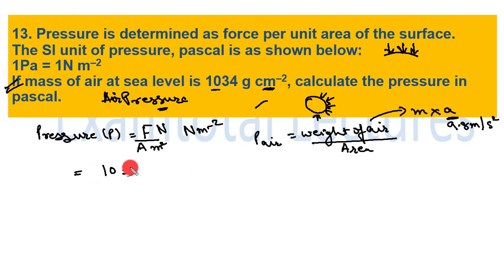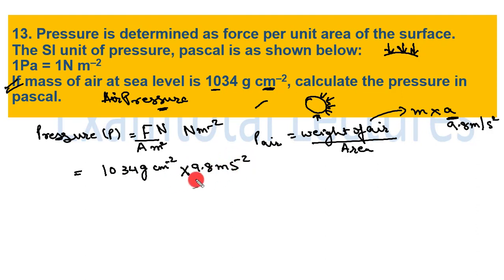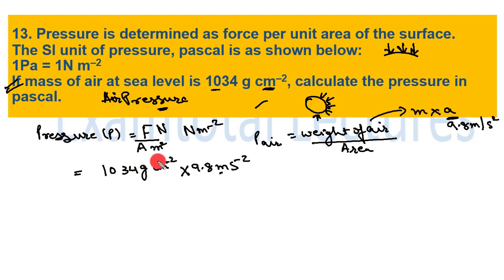We cannot directly multiply because units are mixed: mass is in grams (not SI unit kg) and area is in cm² (not m²). We must convert to SI units. Converting 1034 g/cm² to kg/m²: divide grams by 1000 to get kg, and convert cm² to m².